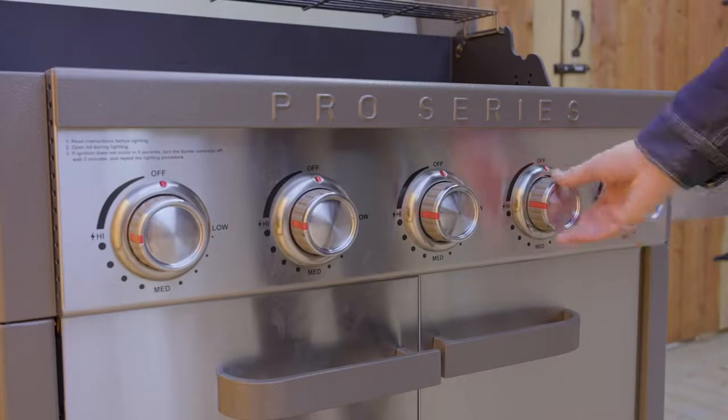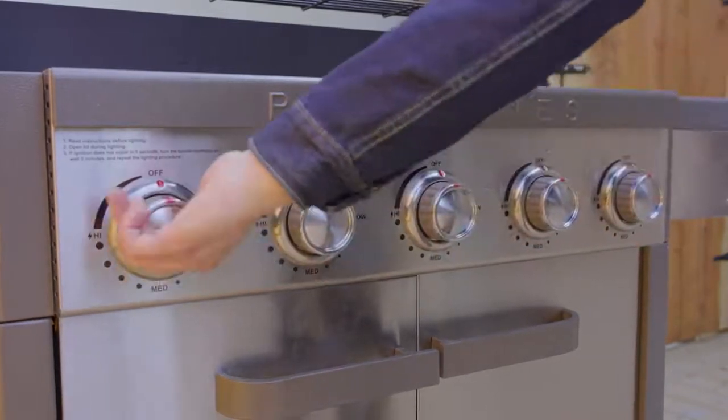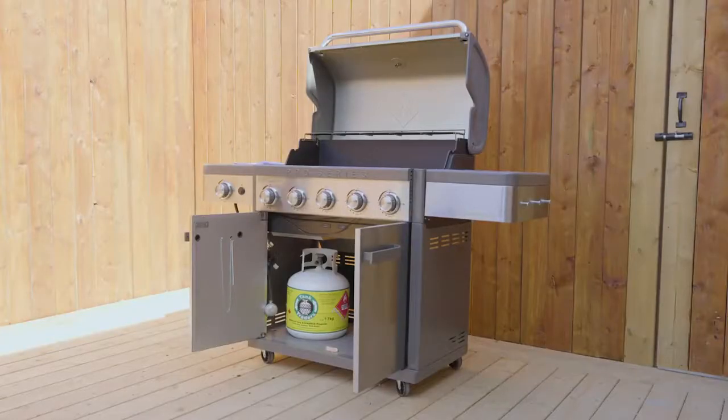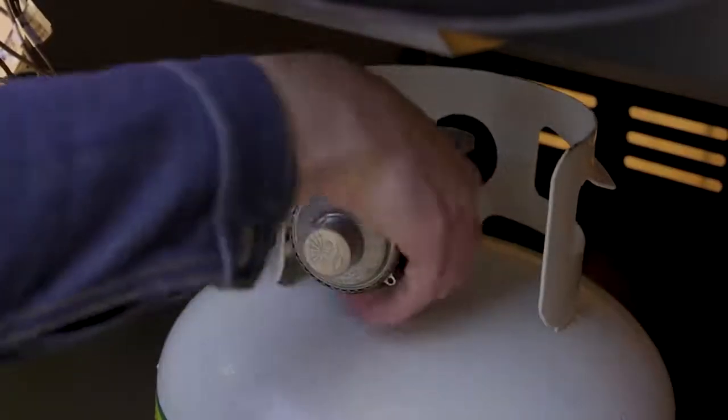Turn all control knobs back to the off position. Don't forget about your side burner control knob. With the barbecue lid still open, reconnect the regulator to the LP cylinder.